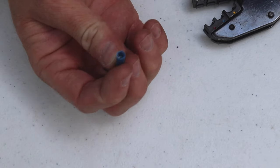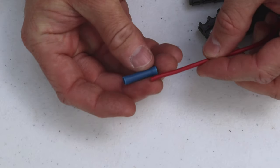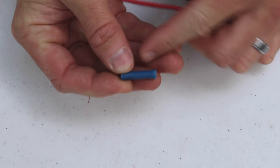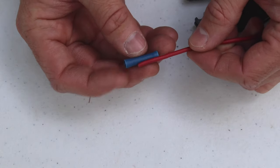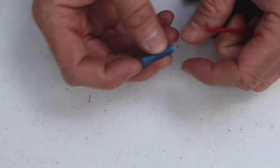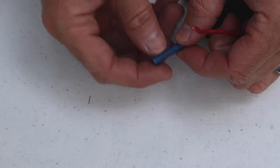Crimping a butt connector is pretty much the same thing but it's a little bit more tricky because you can't see when your wire is far enough. If you cut off too much wire it'll stick all the way through and you won't have anything for the corresponding wire to come in from the other side.